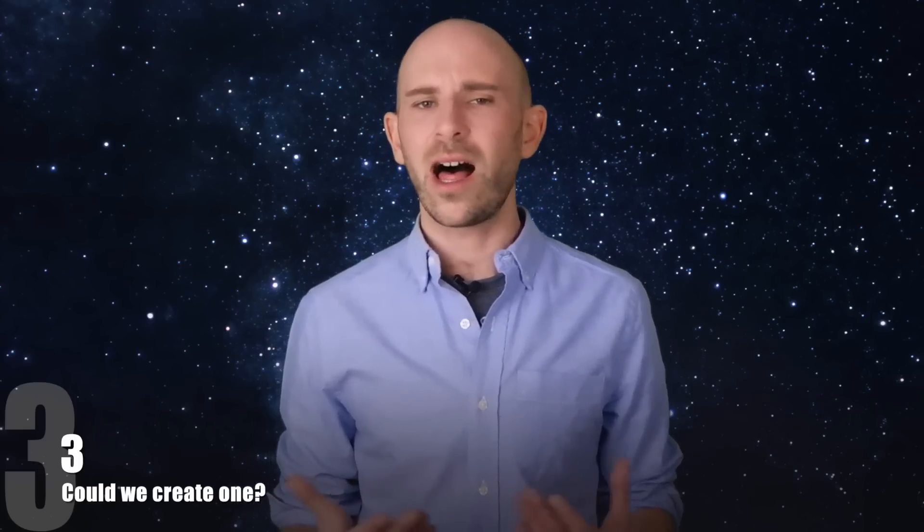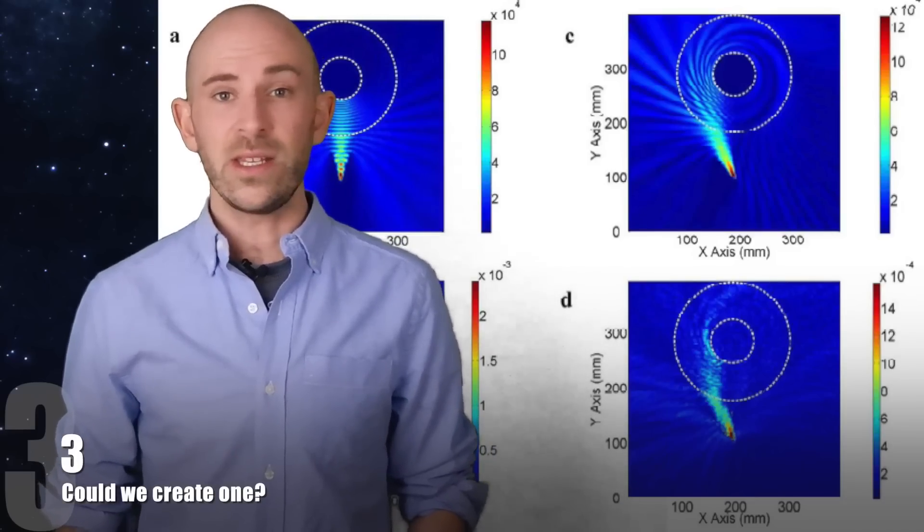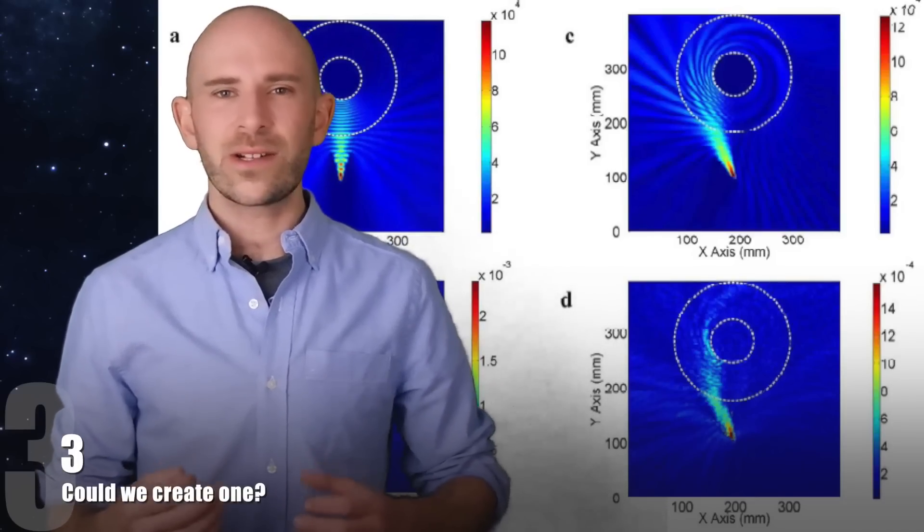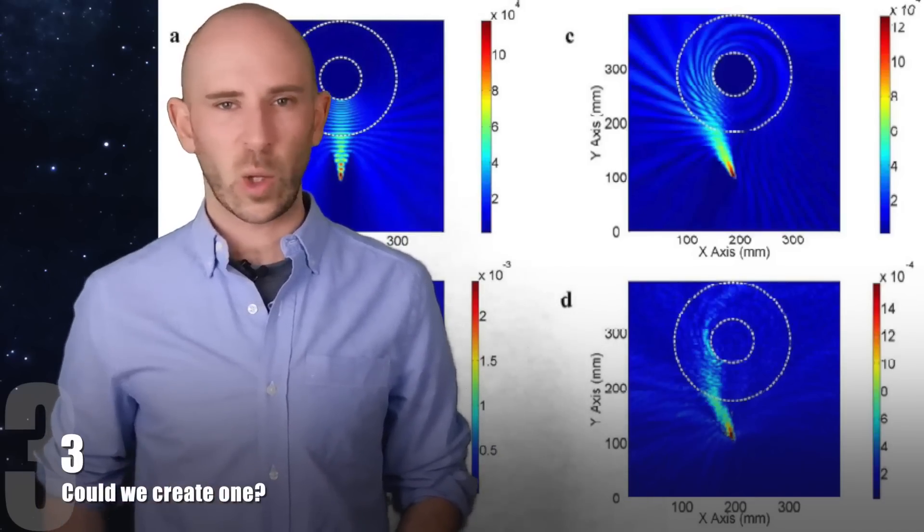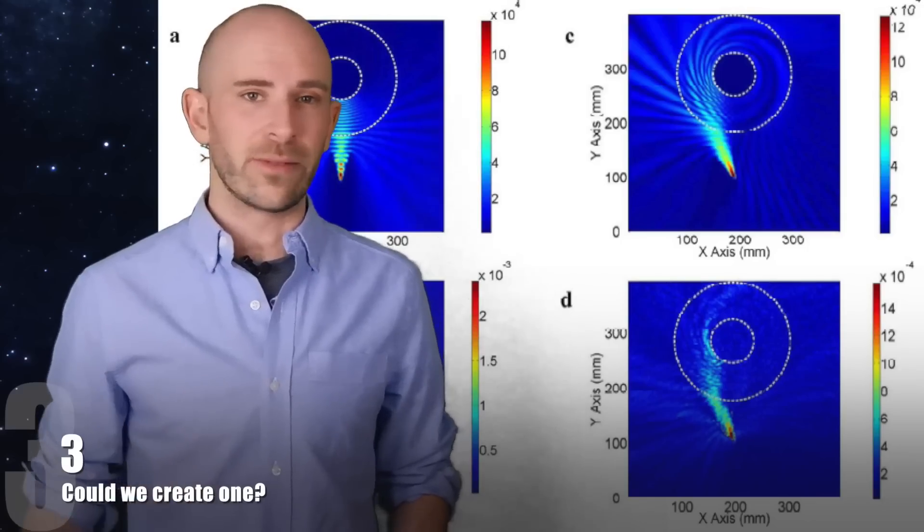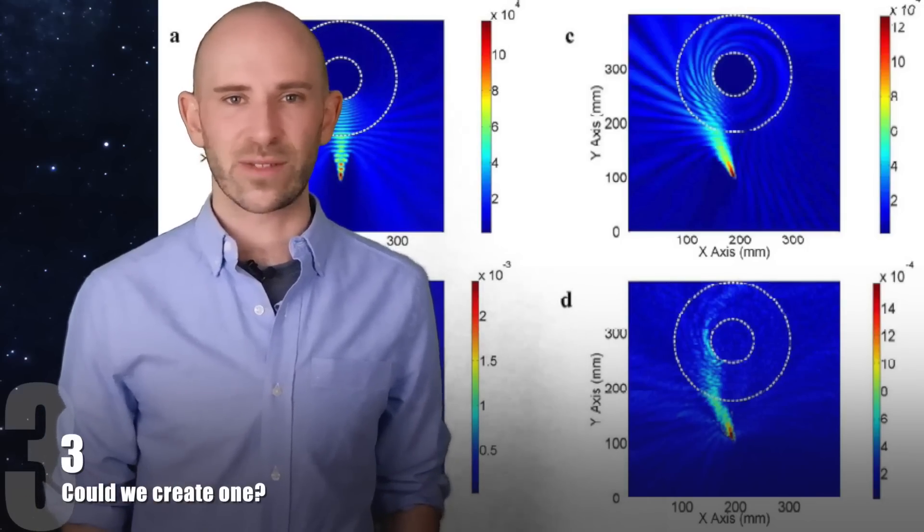3. Could We Create One? It goes without saying that black holes can be dangerous, so we definitely wouldn't want to make one on Earth, right? Well it turns out that we can theoretically make microscopic ones that are harmless. In 2014, using Hawking radiation, researchers came close to mimicking a black hole in a lab, but at the time of this video being released, one has not yet been successfully created.